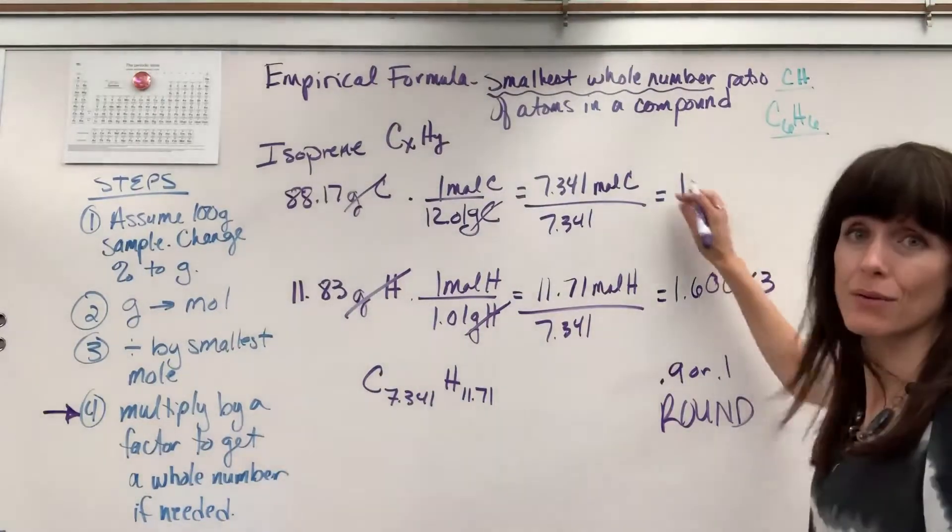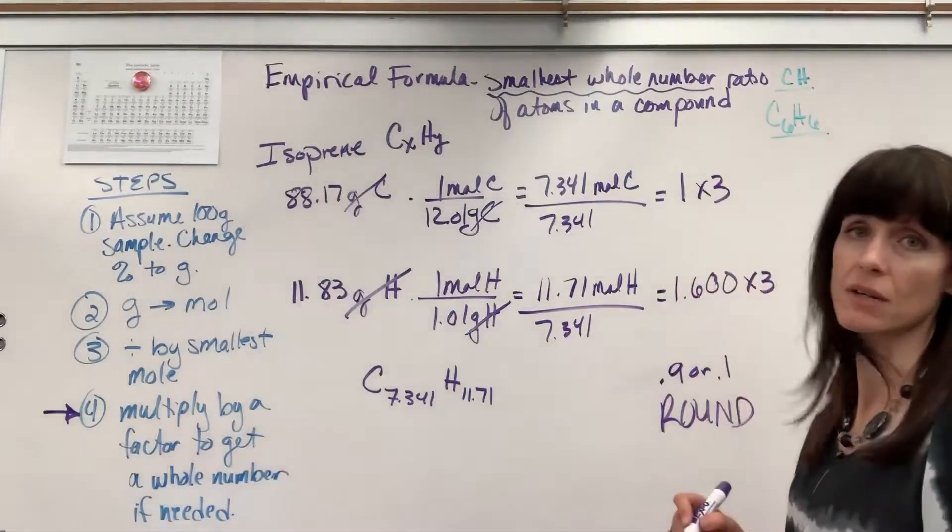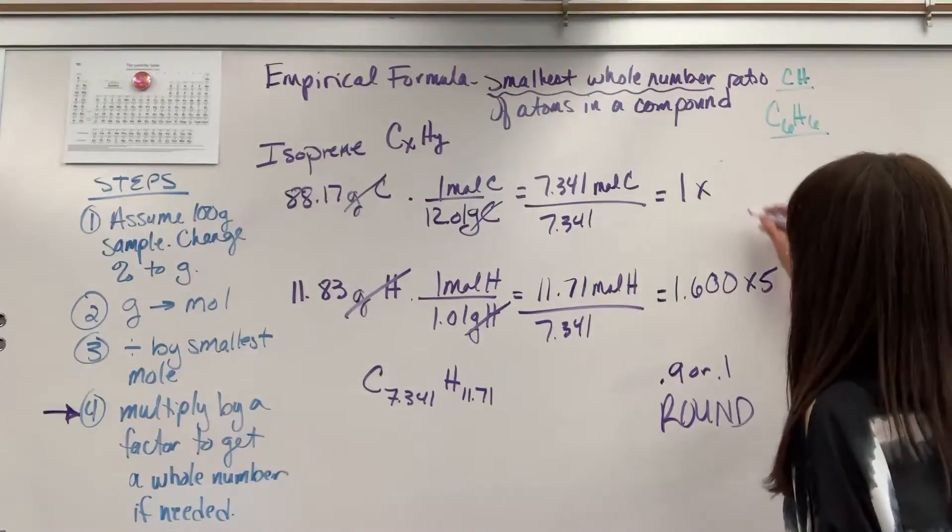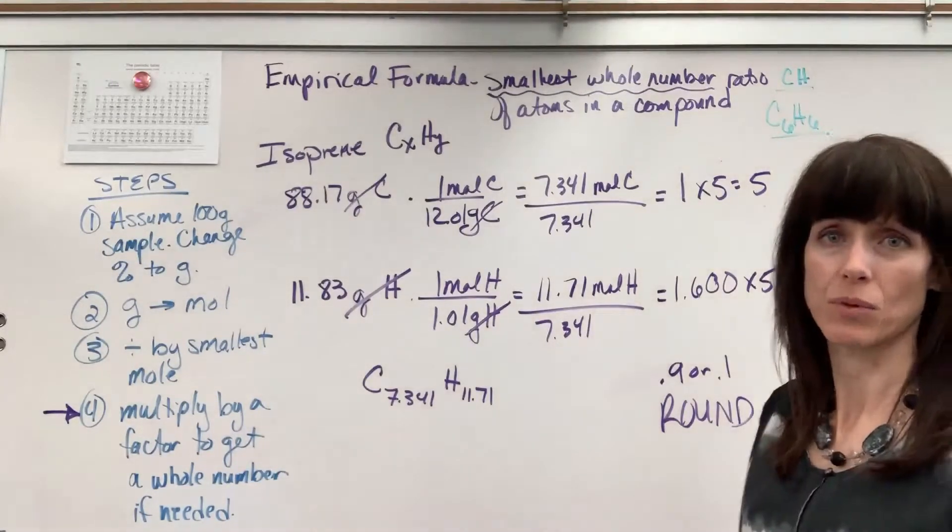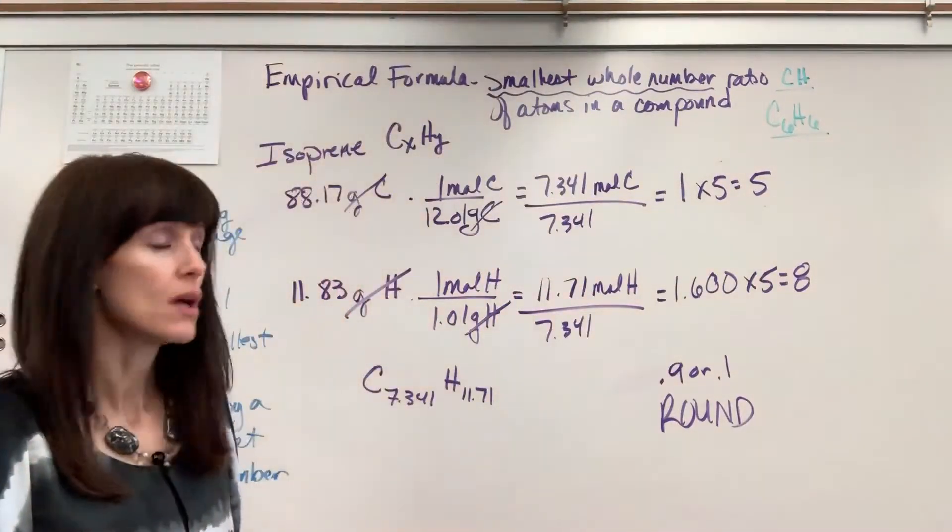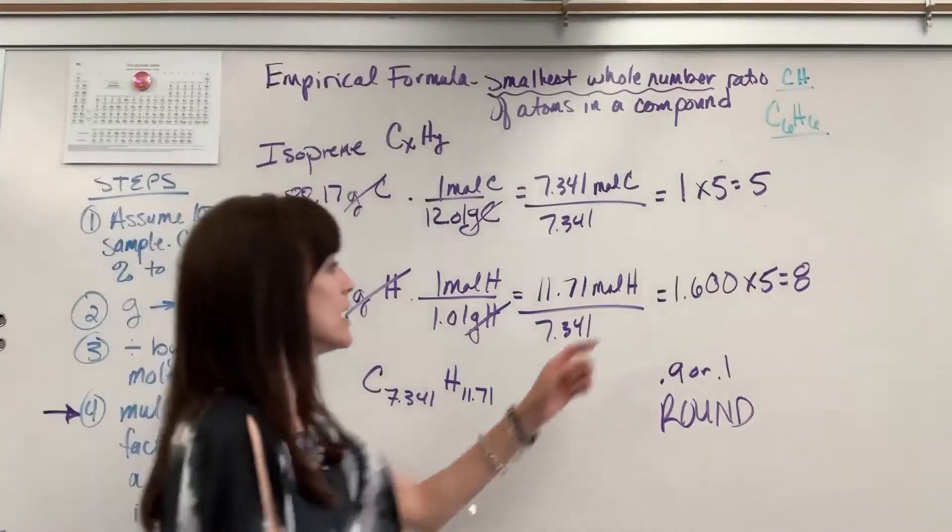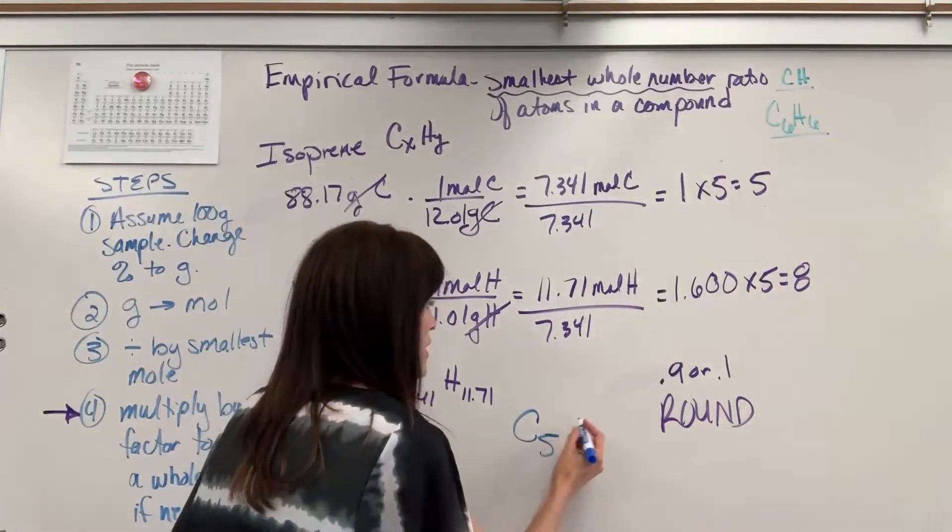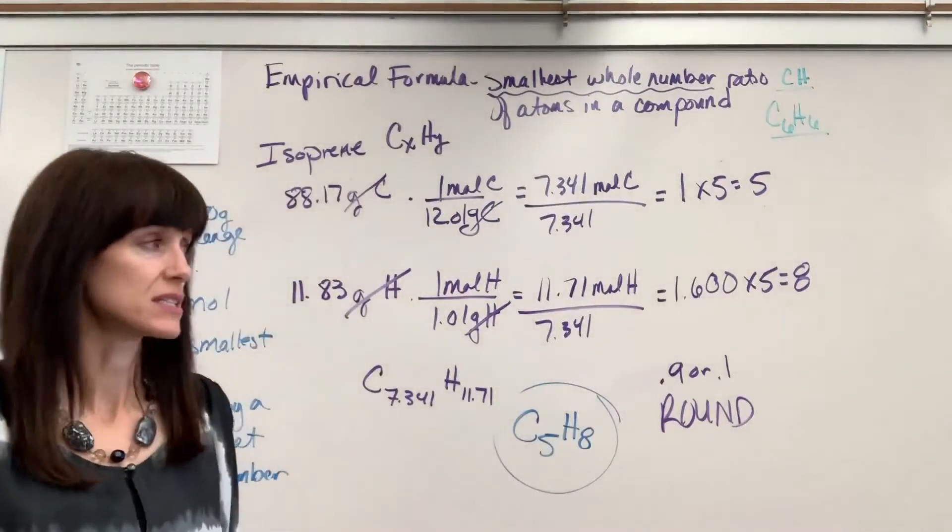Now here's the deal. This is a ratio. So whatever I do to one I have to do to the other. Times 3. Oh so sorry. Times 5. I said 5 and I wrote 3. Times 5 times 5. So this is going to give me 5 and that's going to give me 8 when I multiply those. Now I have my smallest whole number. Notice it can't be reduced. And they're whole numbers. So final thing that we do. Those are the subscripts. Carbon is going to be a 5 and hydrogen is an 8. And that is isoprene.